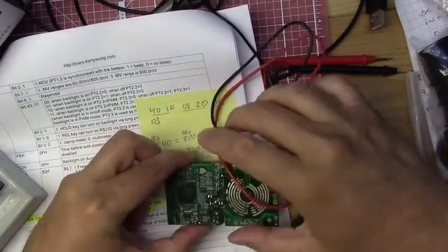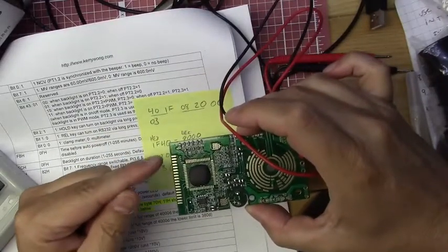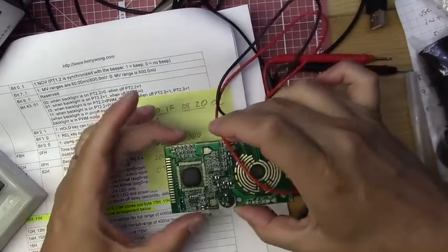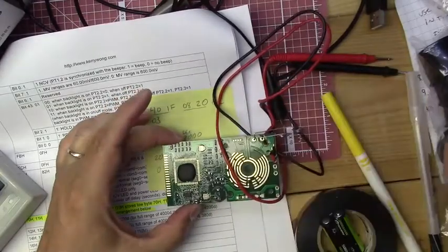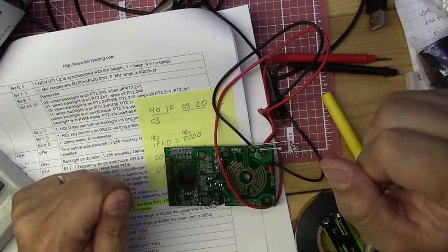And, of course, the zebra strips make contact here with this area here. Okay, so I'm going to pause the camera here and put it all back together. And hopefully I come back with a working multimeter.